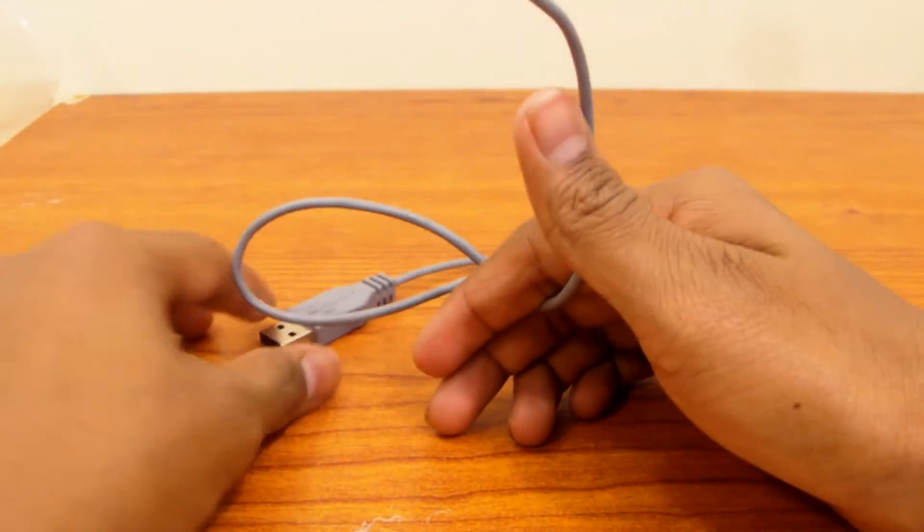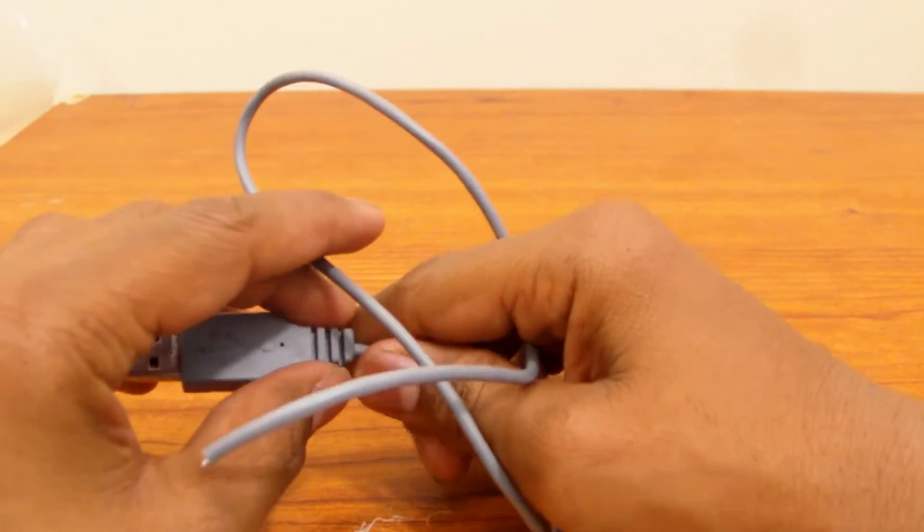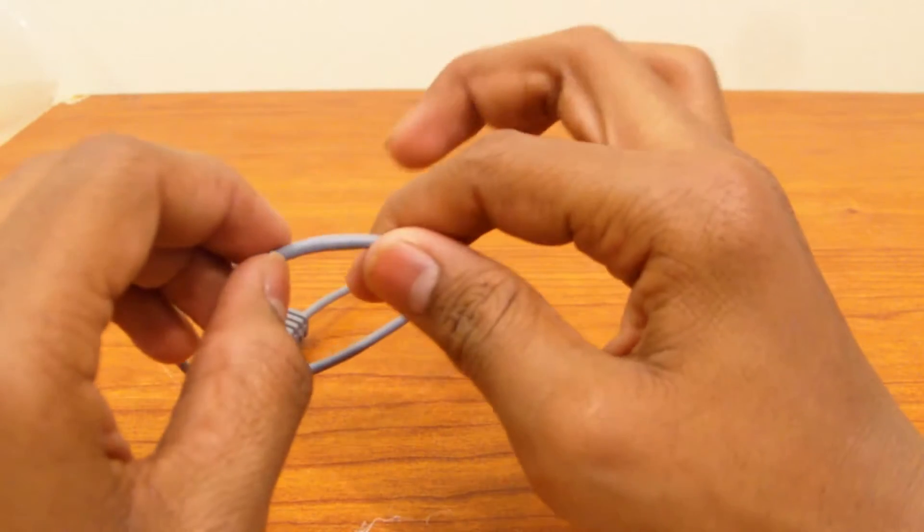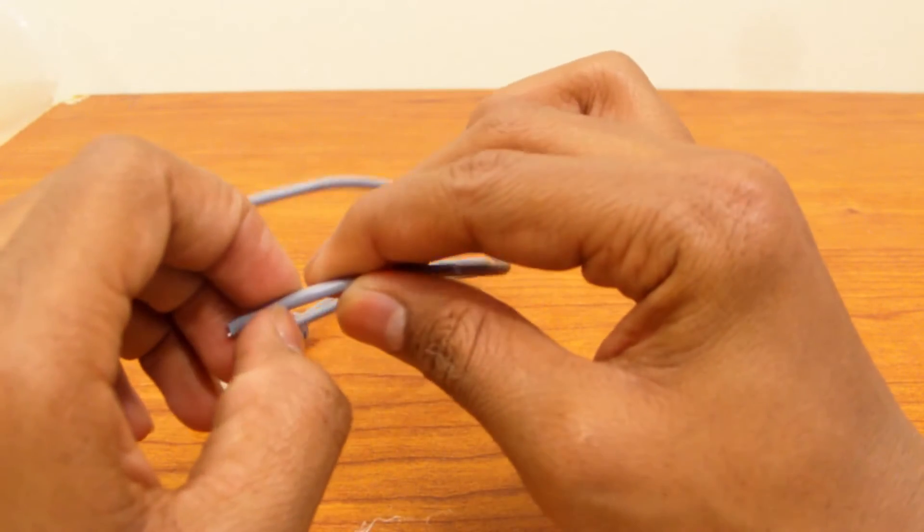Now that I cut the USB cable, we're going to need this end of the USB to make it USB powered. You're just going to expose some of the inner wires by cutting this wrapping off.